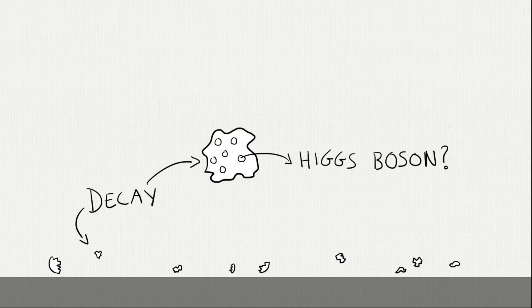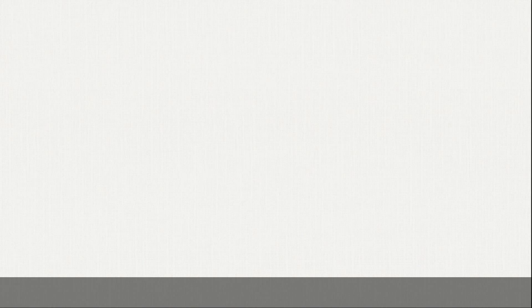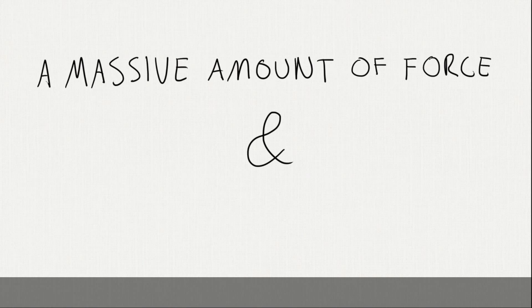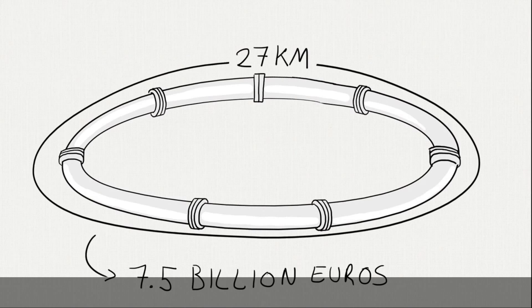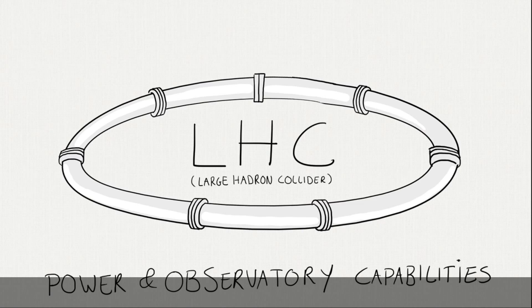You need to collide two particles and study the decay, and see if it contains part of the Higgs field, called a Higgs boson. But, a massive amount of force and some super-quick measuring instruments are needed. For that reason, CERN created the impressive LHC near Geneva. The LHC has the power and observatory capabilities to discover a Higgs boson.